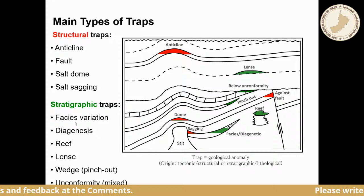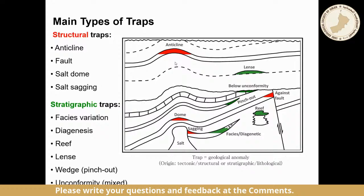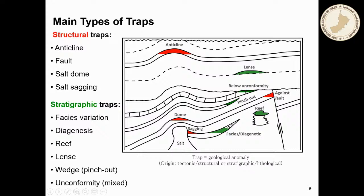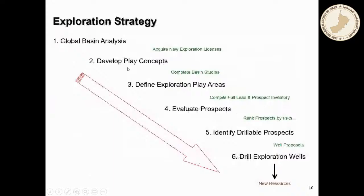There are different types of traps. Structural traps include anticlines, domes, traps against salt, and traps against faults. Stratigraphic traps include pinch-outs, reefs, build-ups, unconformities, onlaps, lenses, and facies changes — for instance clinoforms explained in the first lecture. The most common and lowest-risk traps for exploration are usually structural traps.